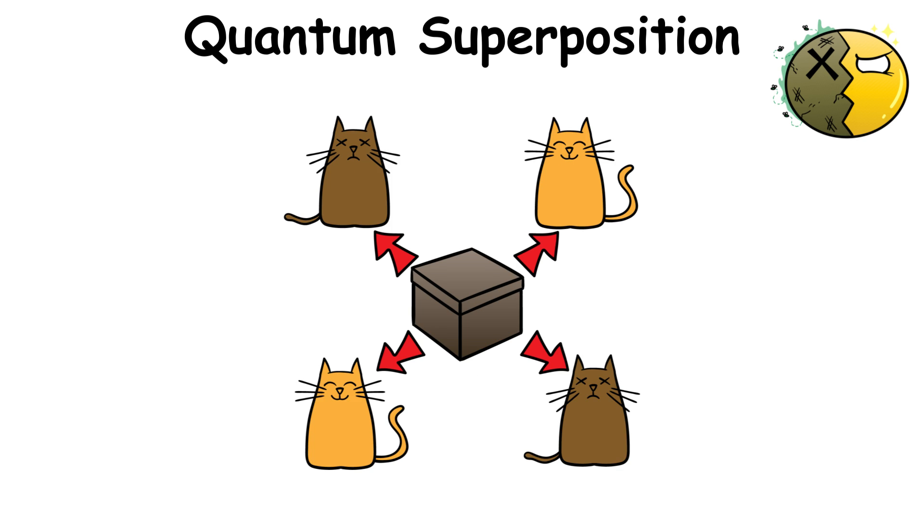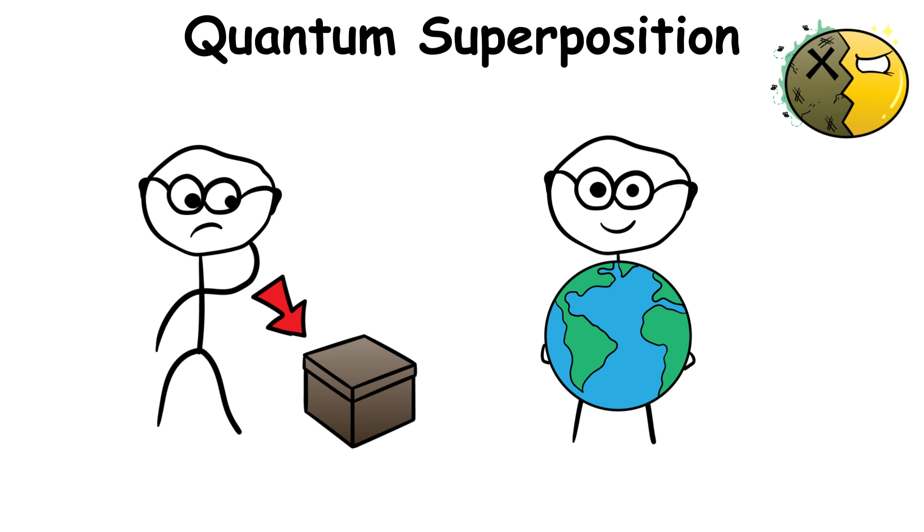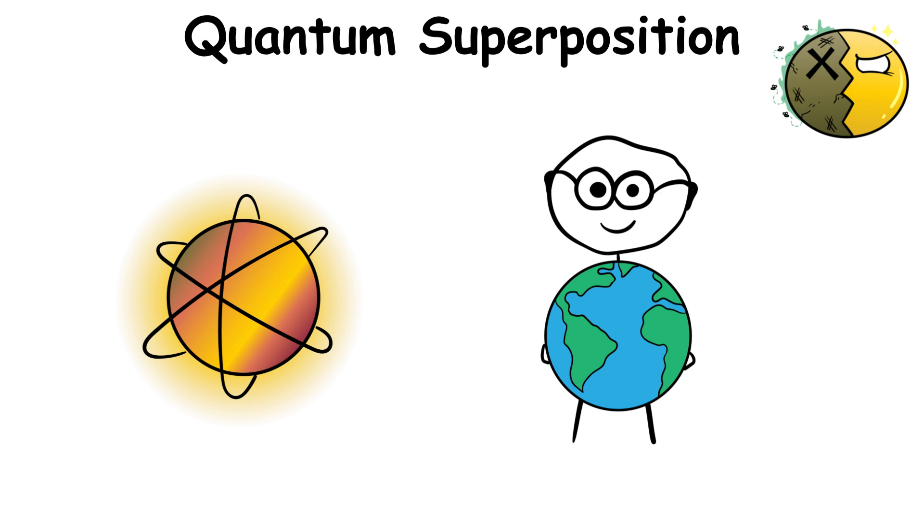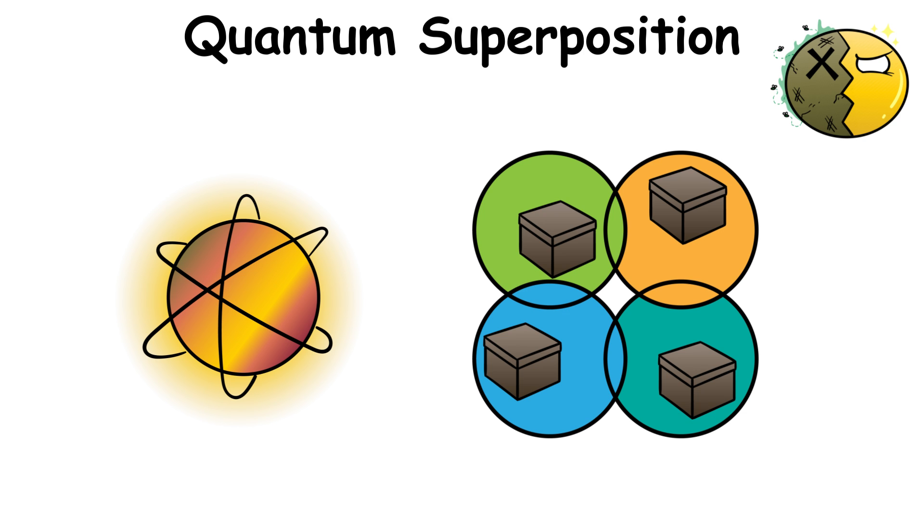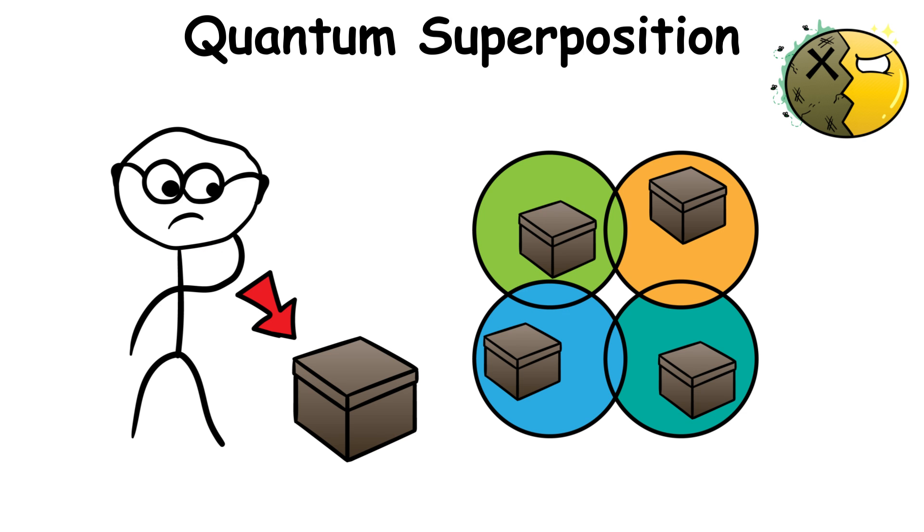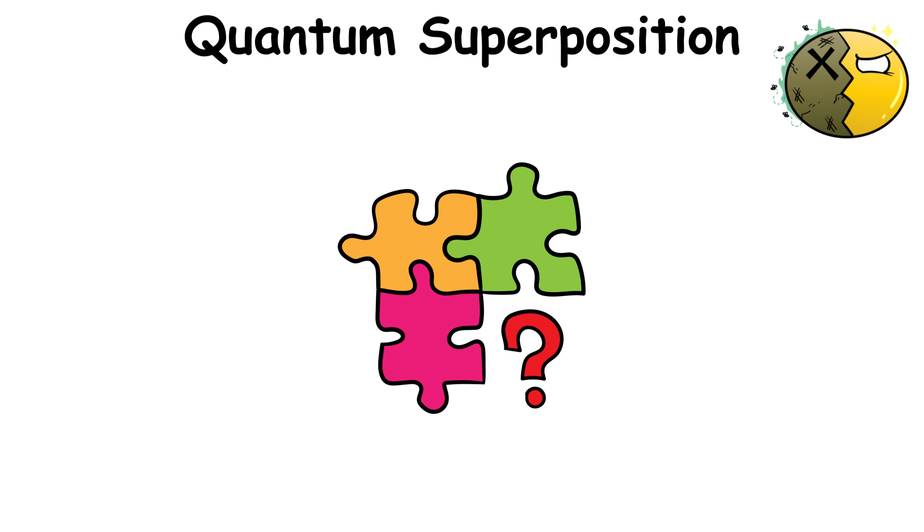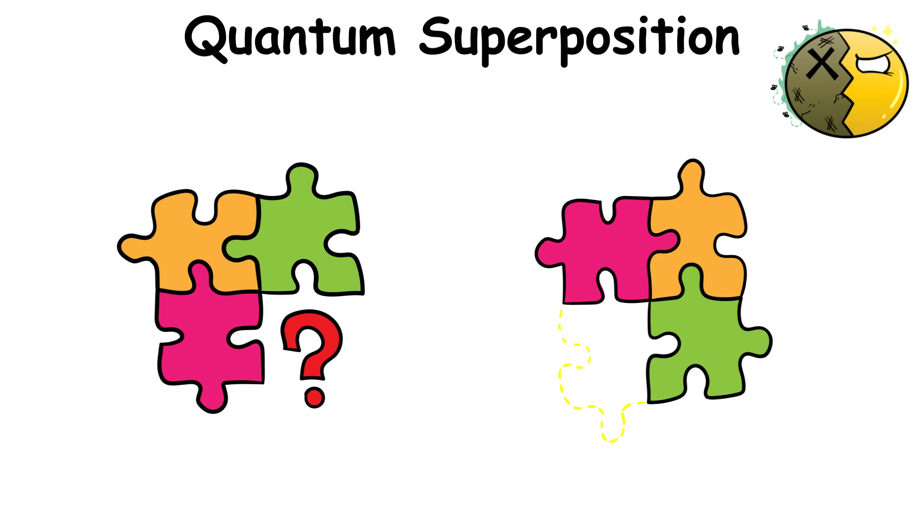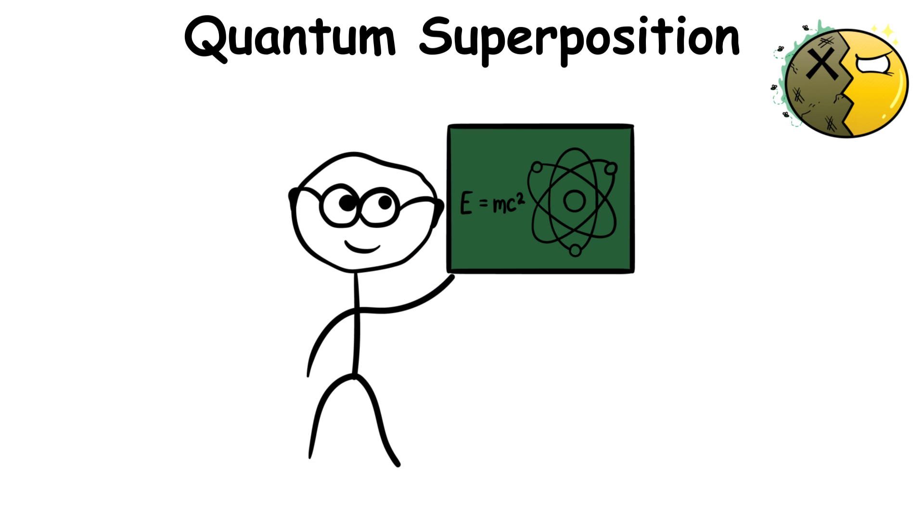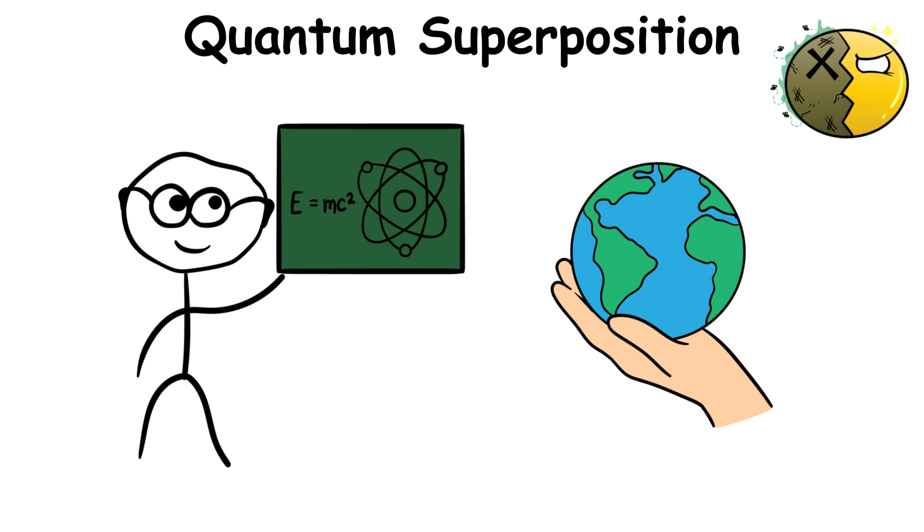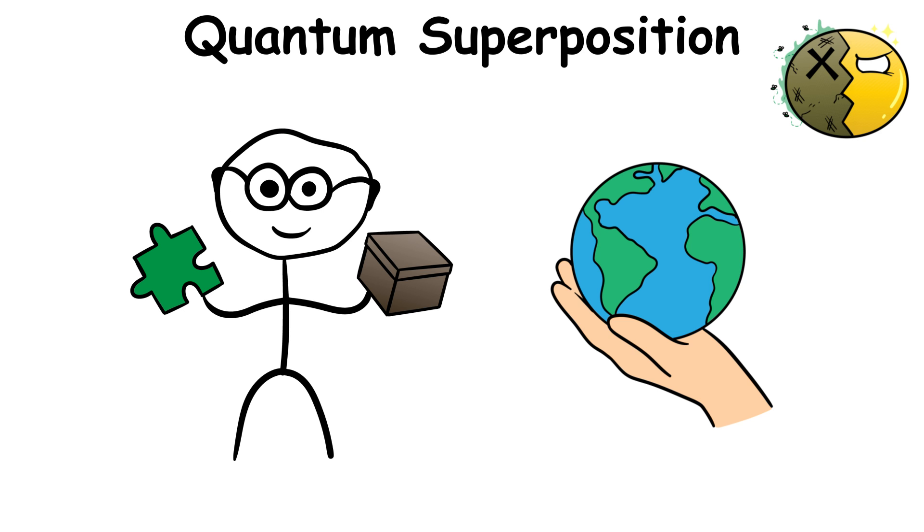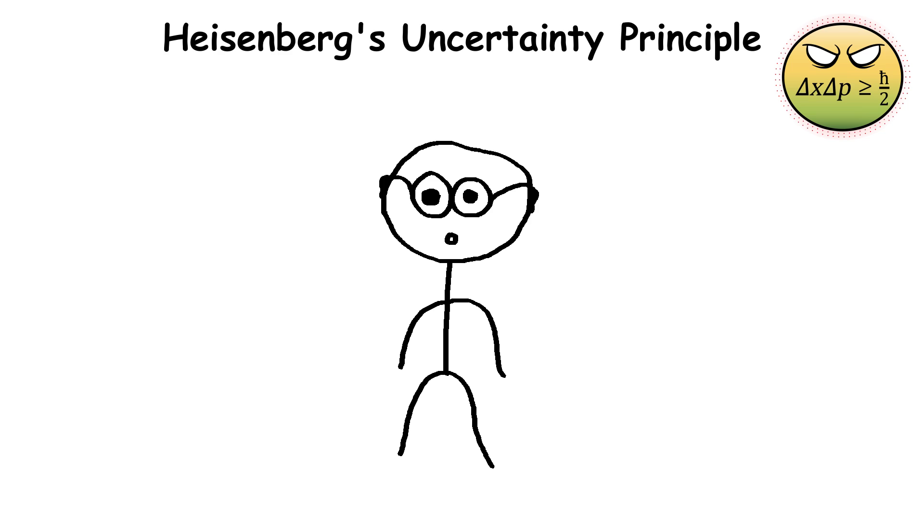In short, anything can be true or false until we observe the world around us. Similarly, a particle in quantum superposition can exist in multiple states until it is observed. Returning to the jigsaw puzzle analogy, we only see where the pieces fit until we observe them in the bigger picture. Quantum physics tells us that everything in the world is possible until the moment of observation.